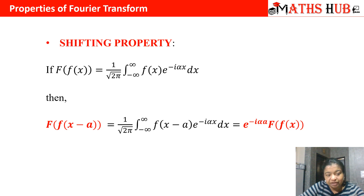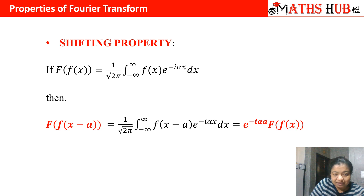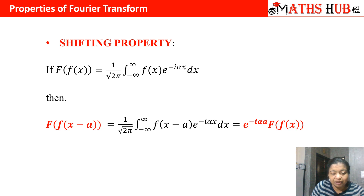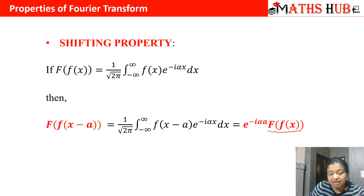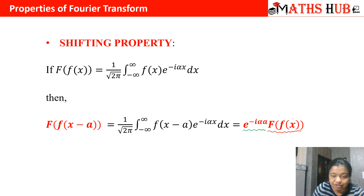Whenever we shift f(x) to f(x − a), the variable x has been shifted to x − a. The change in the answer is: whatever is the Fourier transform of f(x) remains as it is, and you multiply by a factor e^(−iαa). This factor gets multiplied according to the shift given in the question.